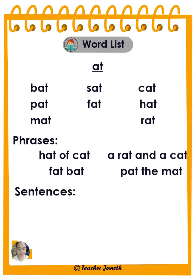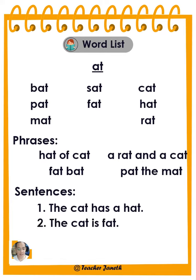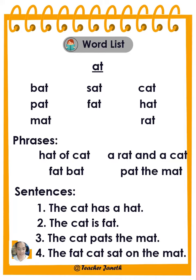Sentences: The cat has a hat. The cat is fat. The cat pats the mat. The fat cat sat on the mat.